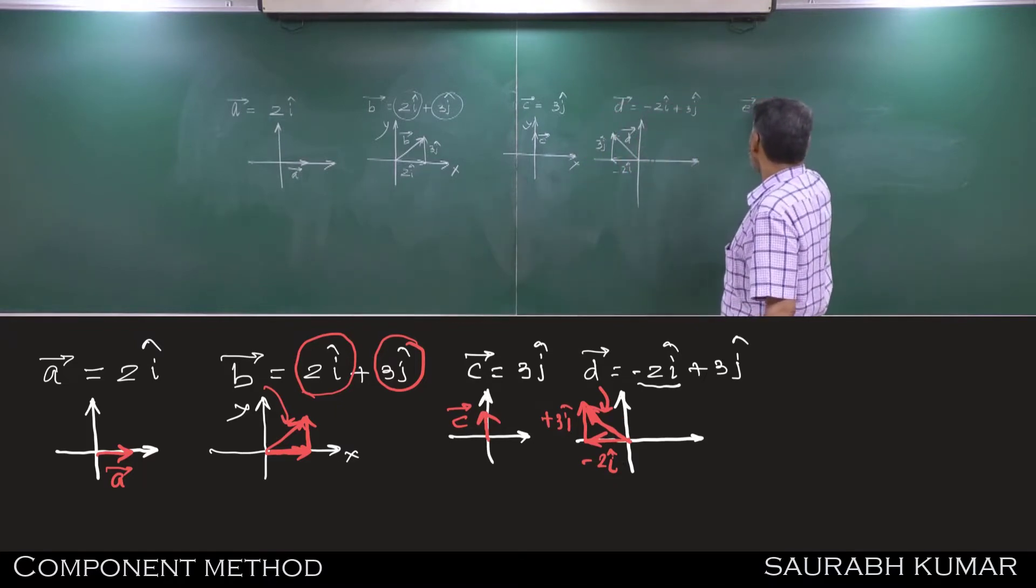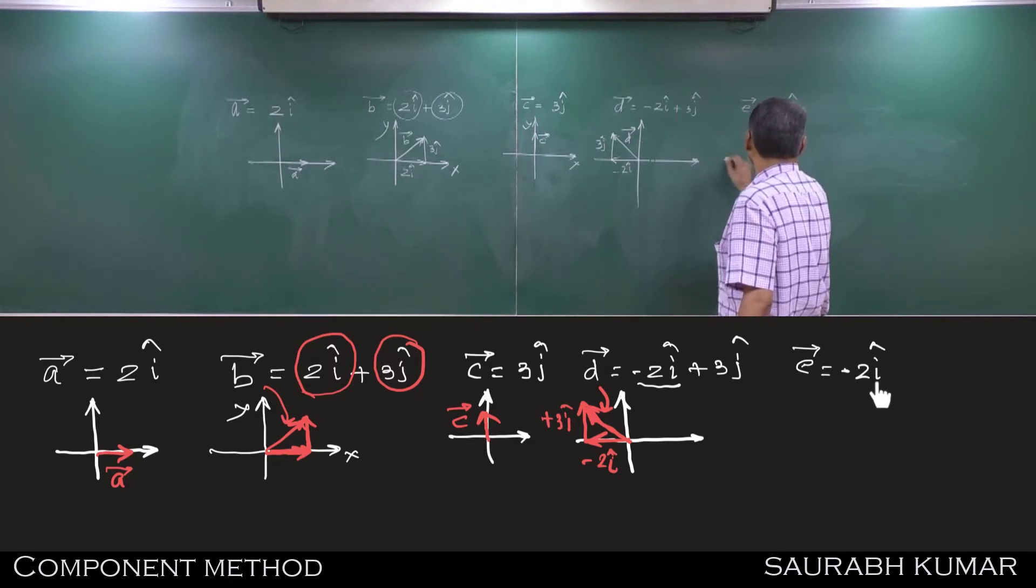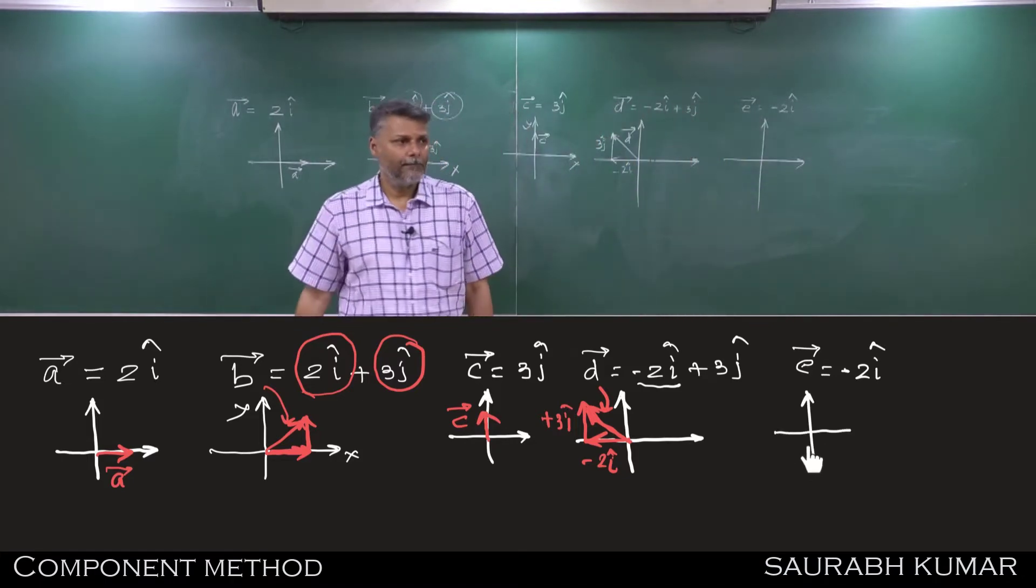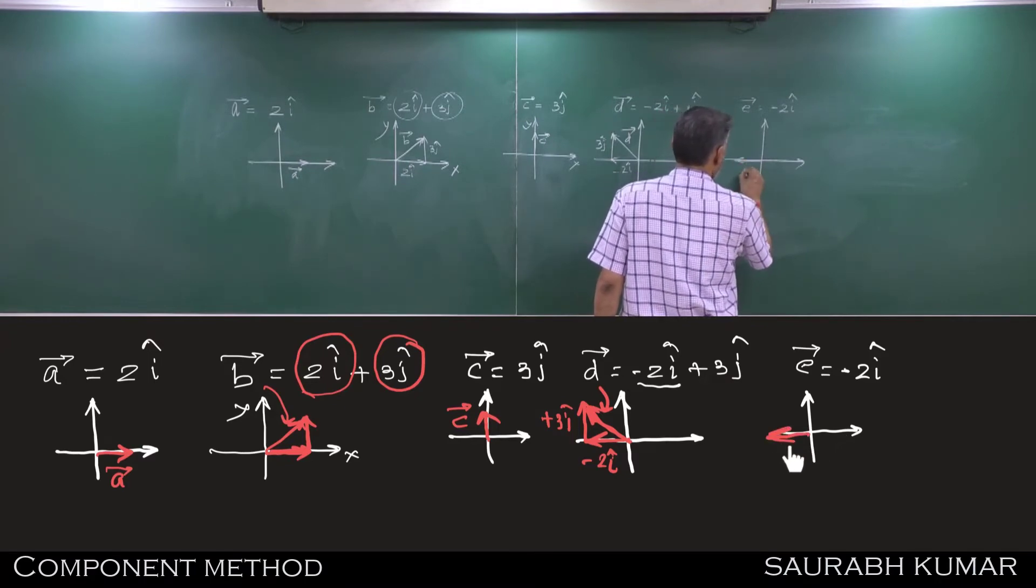Vector E minus 2i cap. Which direction? Negative x axis.